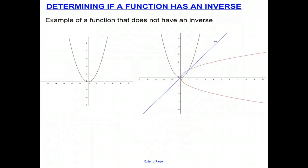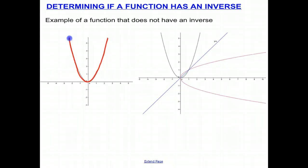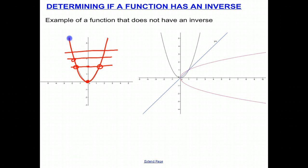Now let's look at an example of a function that does not have an inverse. Here's a parabola — this quadratic function does not have an inverse because it is not one-to-one. We could pick any y value and draw a horizontal line; it intersects in two different places. That means for one y, you have two x's. Therefore it is not one-to-one. As long as that happens at least once, it's not a one-to-one function. So this fails the horizontal line test, and therefore its inverse is not a function.